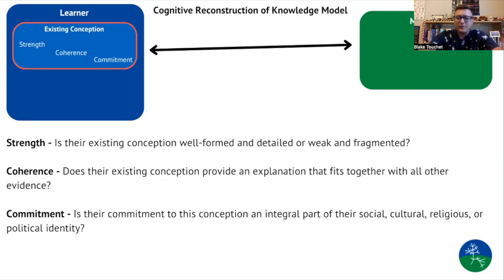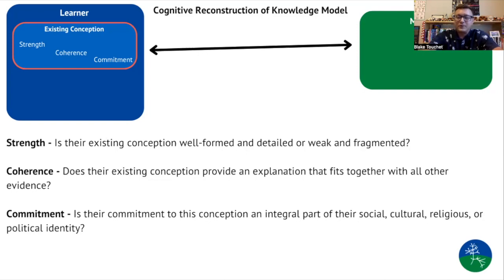The first is the strength of that misconception. Is the misconception the student is bringing into the classroom well-formed and detailed? Do they hold a good picture of it in their mind already, or is it weak and fragmented? The second piece is coherence — how well does the student's misconception provide an explanation that fits together with all of the evidence? Is it coherent with everything else that they believe and understand about science?